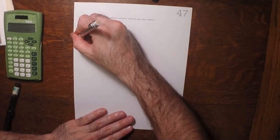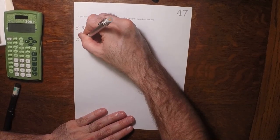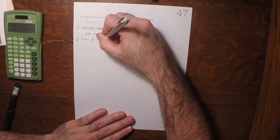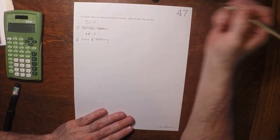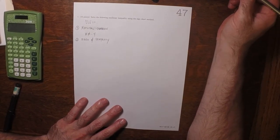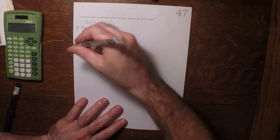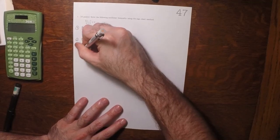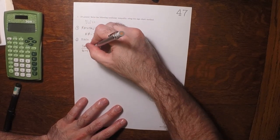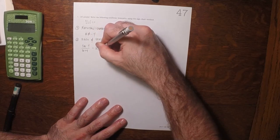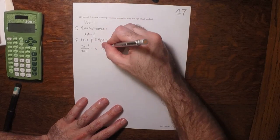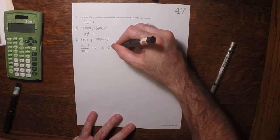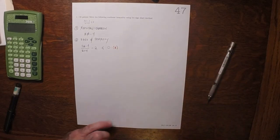The second step is the zero and simplify step. So we have (3x - 1)/(x + 4) minus 2 is less than or equal to 0. Now we've zeroed one side. That's the zero in zero and simplify.